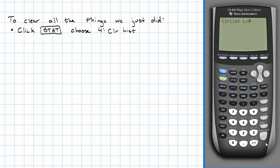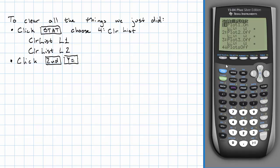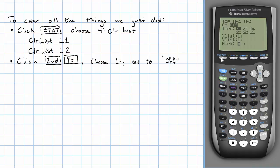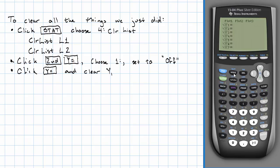Well, we want to clear list 1 and we want to clear list 2. This clears out all of the numbers that we typed in, all of our values of T and M. Now we'll click 2nd, Y equals, choose number 1, and just set it to off. And then finally, we'll click Y equals and just clear Y1. Now 2nd, quit to get back to the main screen, and we've cleared out all of the things that we just set up.